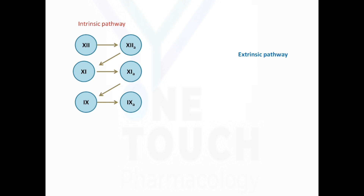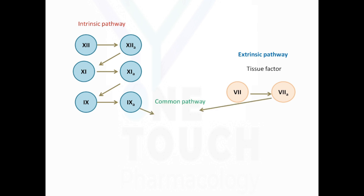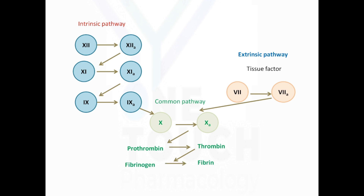The extrinsic pathway is called so because it needs tissue factor from outside. Tissue factor activates factor VII. From here on, both the extrinsic and intrinsic pathways share a common pathway — activated factor VII and activated factor IX activate factor X. Factor Xa activates prothrombin to thrombin, and thrombin activates fibrinogen to fibrin.